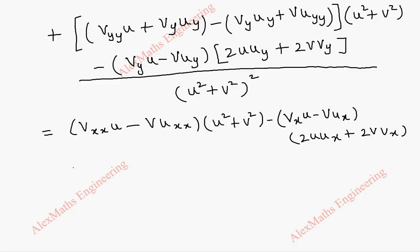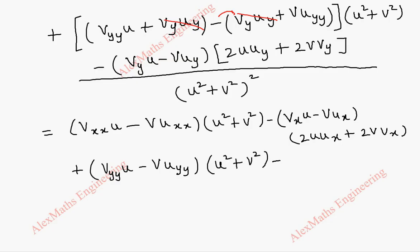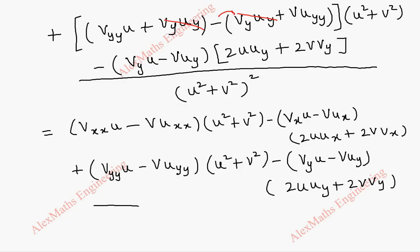Similarly for the y-terms: vyy times u minus v times uyy, with the product of (vy u minus v uy) times (2u uy plus 2v vy). Combining with a common denominator of (u squared plus v squared) whole squared, we group the terms where u squared plus v squared can be factored out.